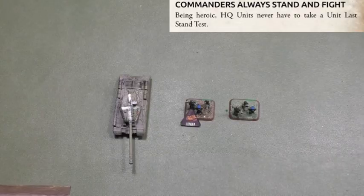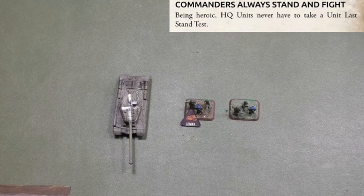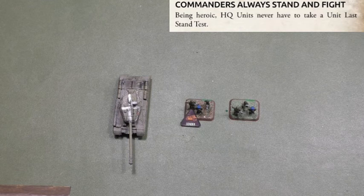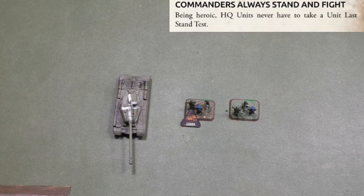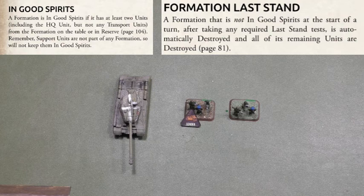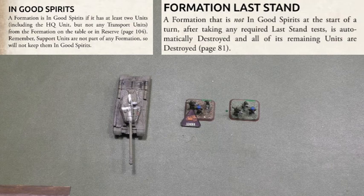A formation HQ unit never has to take a Last Stand test, compared to other platoons or companies or battalions of infantry. The reason is the formation HQ is where the commander is for the formation, and the commander always stands and fights — being heroic. HQ units never have to take a unit Last Stand test. For the formation Last Stand, the formation needs to be in good spirit. A formation is in good spirit if it has at least two units, including the HQ unit, but not any transport units, from the formation on the table or in reserve. Support units are not part of any formation, so they will not keep them in good spirit.